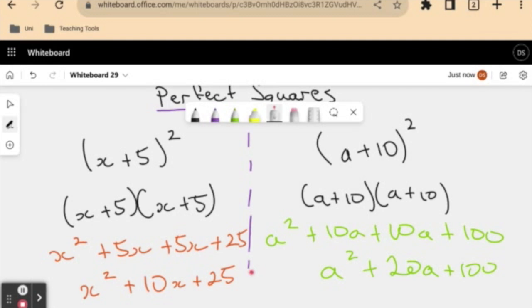And when I did the expansion, I got two lots of the product of these two. I got one 5x here and another 5x here. Now, I got the same thing in my next example, didn't I? Because I got my first term here squared, I got my second term here squared, and I also got two lots of the product of 10 and a, my two terms inside the bracket. So that's pretty cool.